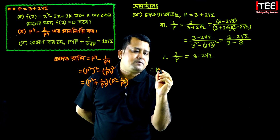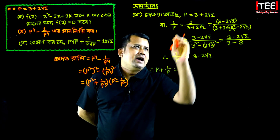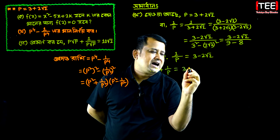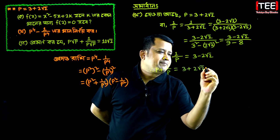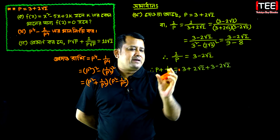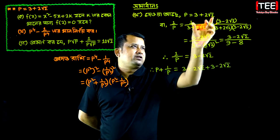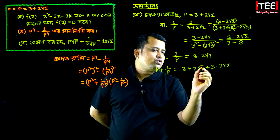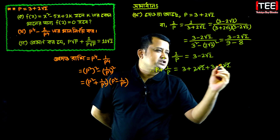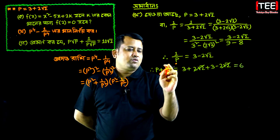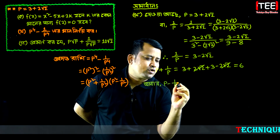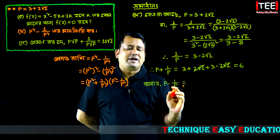So p plus 1 by p. We have 3 plus 2 root 2 plus 3 minus 2 root 2. Therefore p plus 1 by p equals 6. For p minus 1 by p, we get the corresponding result.